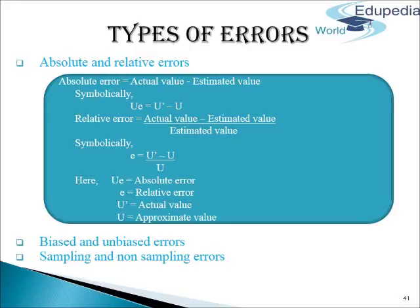Now we come to the second type of error — Biased and Unbiased Errors. Biased errors arise due to some prejudice or bias in the mind of the investigator, the informant, or any measuring instrument. For example, if the enumerator uses the deliberate sampling method in place of simple random sampling, that is called a biased error. These errors are cumulative in nature and increase as the sample size increases. Biased errors arise due to a faulty process of selection, faulty work during data collection, and faulty methods of analysis.